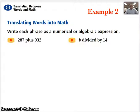Here's a couple more examples of how we're going to use that. It says write each phrase as a numerical or algebraic expression. 287 plus 932. Well, it's pretty easy. That's 287, and that plus indicates addition, plus 932. Answered. Easy. B divided by 14. Well, that's easy, too. We can write it either as B divided by 14 this way, or we can write it as B over 14, which means the same thing, B divided by 14.